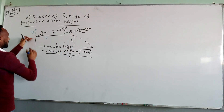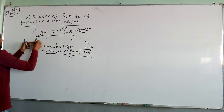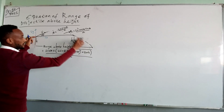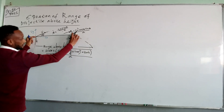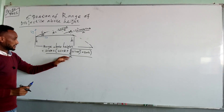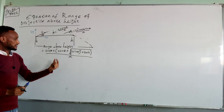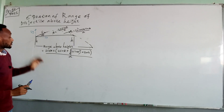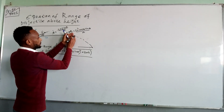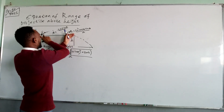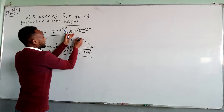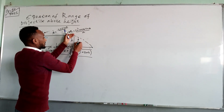Now the projectile occurs above some height h. Finally, it lands at this point. The range above some height h is derived from the previous case. If we define the range above some height h, it is given by that equation. Let's derive these equations. To derive them, we must know that there is motion after the projectile is initially projected at angle theta.